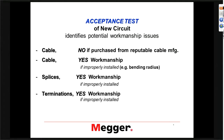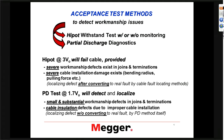What we're trying to do with the acceptance test, for the most part, is flush out workmanship issues. The acceptance test methods include a very common, well-known hypot withstand test either with or without monitoring, and we can do a partial discharge diagnostic test. The hypot test is a very common test — it has been done for many years, back to the days when we installed paper cables.